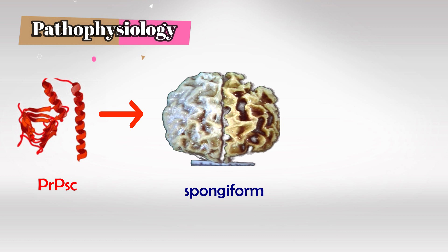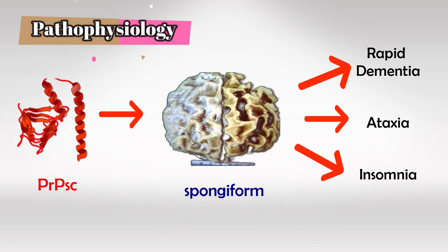The exact process is a non-inflammatory vacuolation of the axons. The axons of the neurons will have vacuoles inside them, and this will cause spongiform brain. So it affects the gray matter. This presents as rapid dementia, ataxia, and insomnia, along with other symptoms.